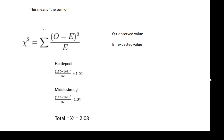For the Hartlepool-Middlesbrough example, let's work it out. The observed value is 150 for Hartlepool minus 163, squared, divided by 163 — you get 1.04. You should get the same value for Middlesbrough, because the difference will be the same. And so our chi-squared value is 2.08.